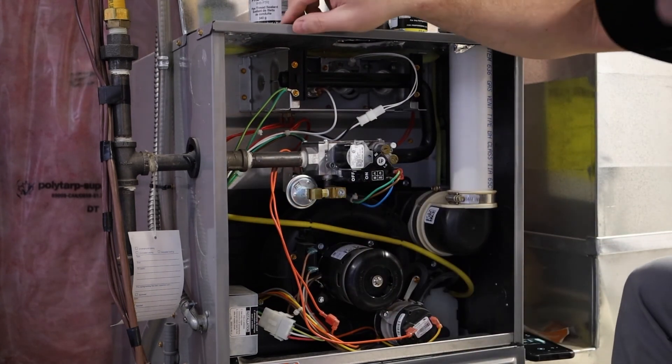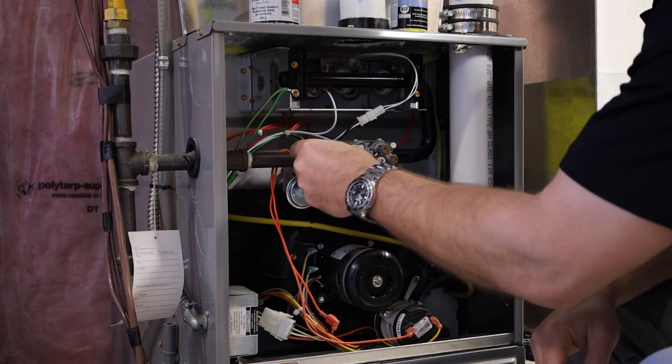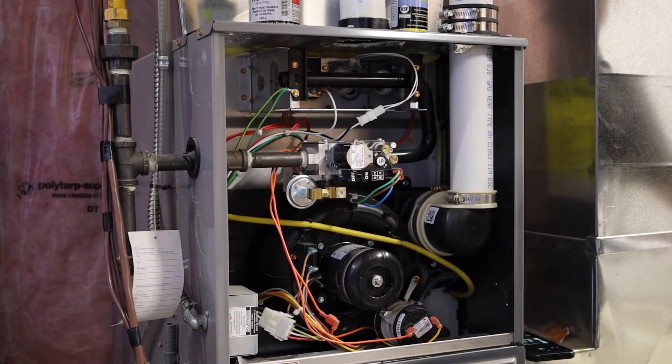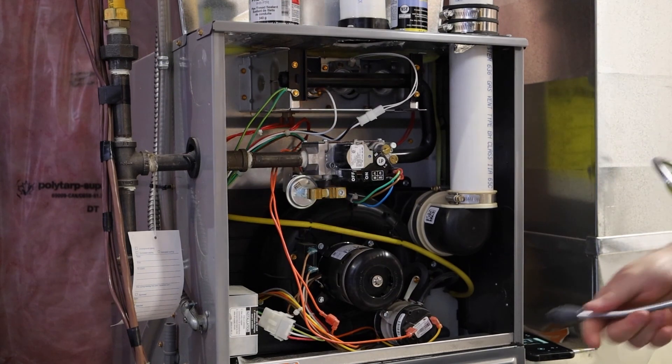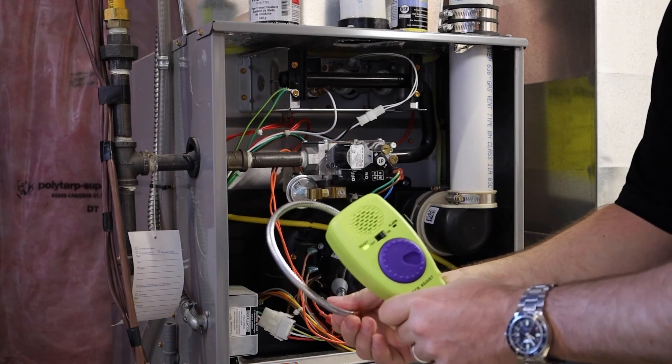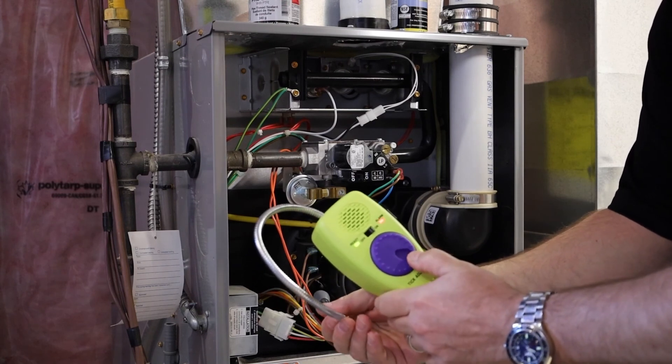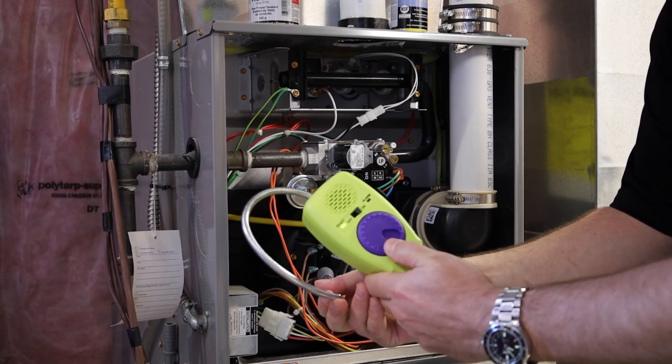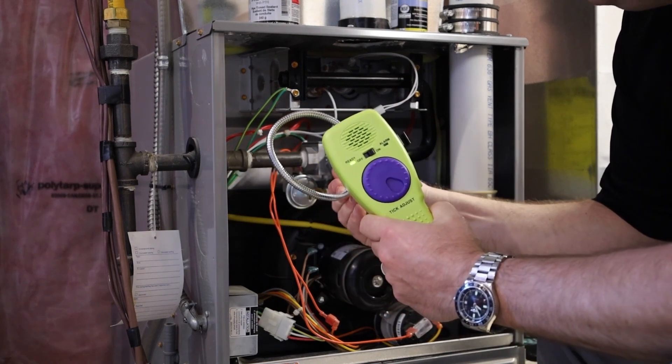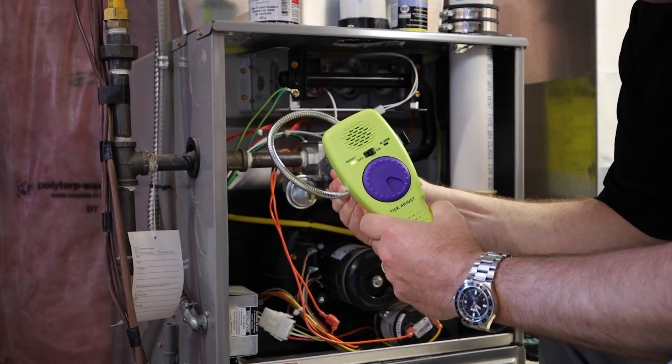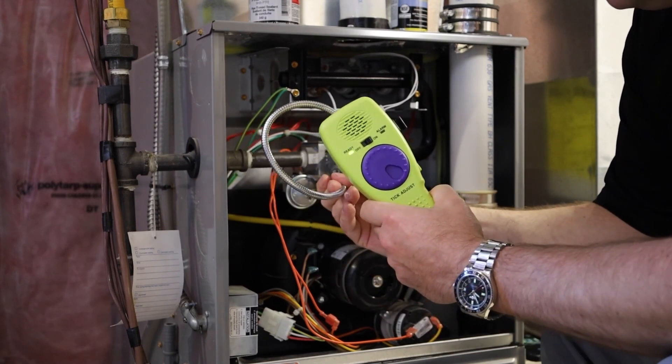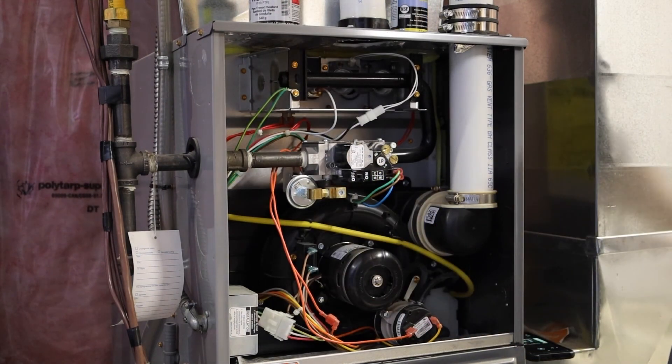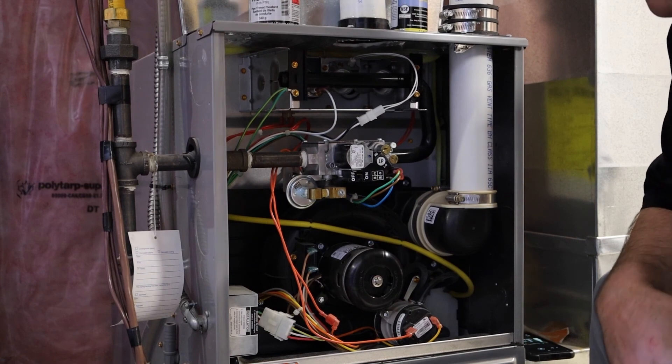Last thing. I'll obviously simulate a leak here. Tighten this up. Using the 720B. Get to my steady state. And I'm going to check for my leak. And I've tightened it up, so of course, there's no leak right there. Safe to put the cover back on. Thanks for joining me in the basement.